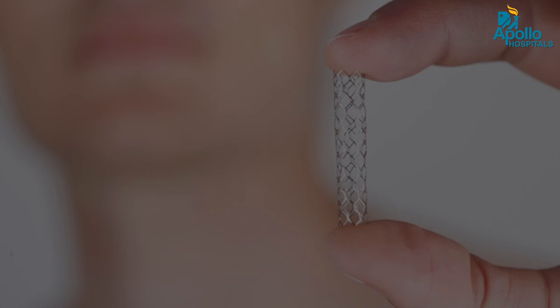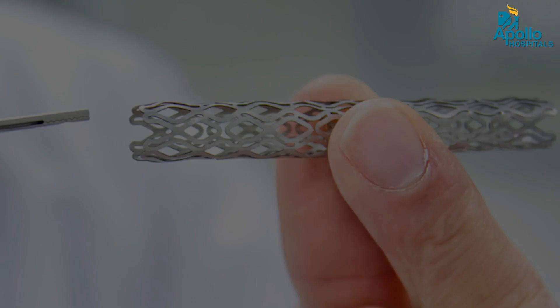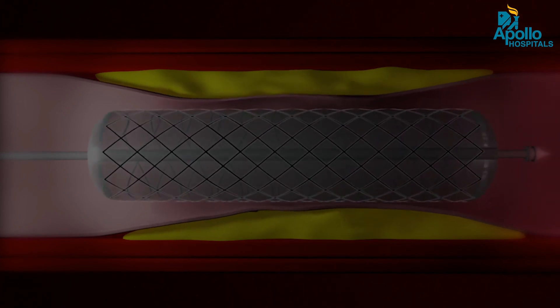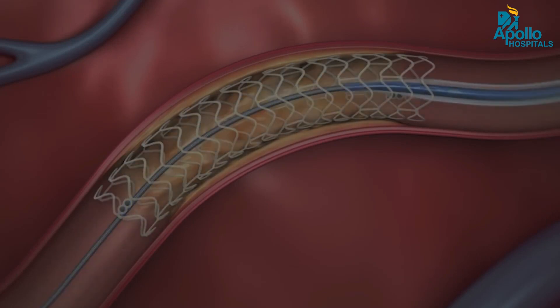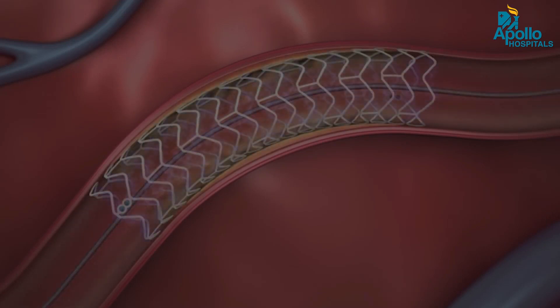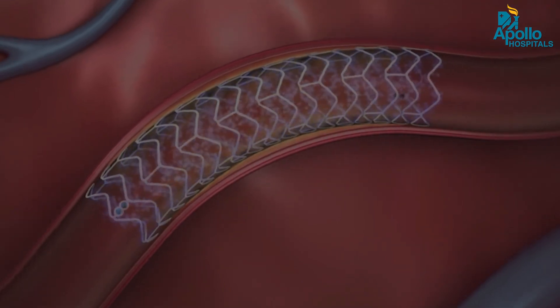Then we have a stent — the coronary stent, also called a drug-eluting stent. It is a mesh-like device, about 60 to 80 microns in thickness — a very thin device. It is mounted and shrunk on a balloon. When positioned across the lesion, the balloon is inflated, and the stent expands and attaches to the blood vessel. After implantation, the balloon, wire, and catheter are all removed, and the coronary stent remains inside the blood vessel for life.